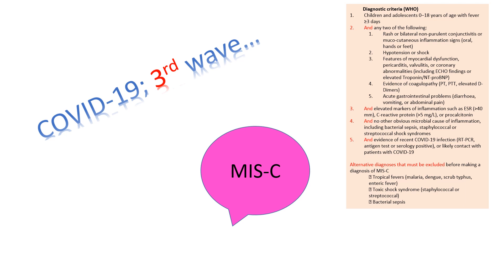Alternative diagnoses that must be excluded before making a diagnosis of MIS-C include tropical fevers like malaria, dengue, scrub typhus, and enteric fever — which we are seeing a surge of, especially in the state of Uttar Pradesh — as well as toxic shock syndrome from staphylococcal infection and bacterial sepsis.